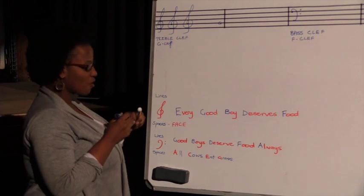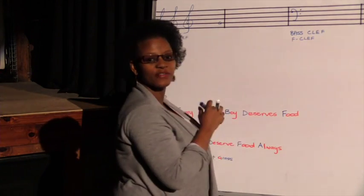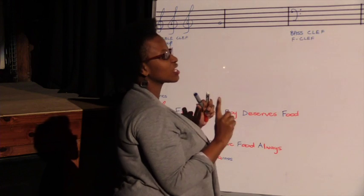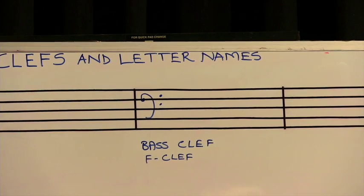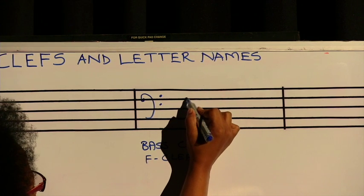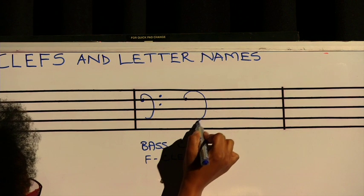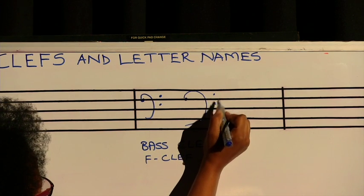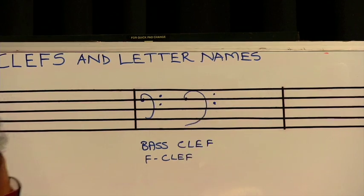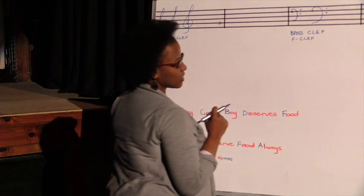Now with the bass clef, yes you have guessed it right, we start drawing it on the F line because it's also called an F clef. You make your dot there like a little ear that goes around like that, and you have two dots in the first spaces at the top.